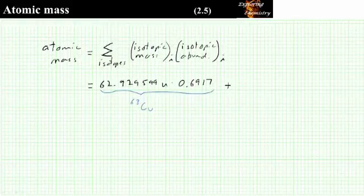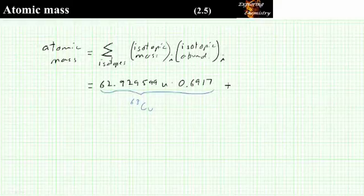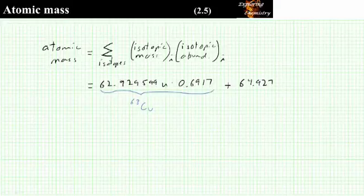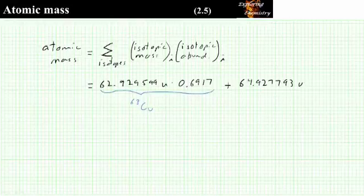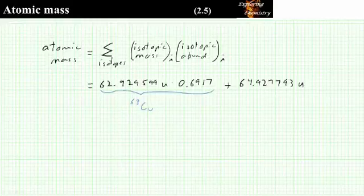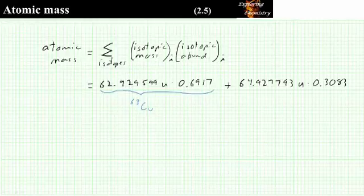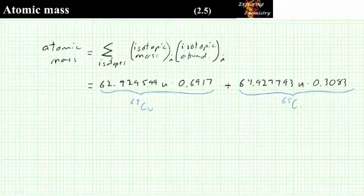And we now need to add the data for the other isotope, the mass of 65-copper. The mass of 65-copper is 64.927793 atomic mass units, and the abundance is 0.3083. And this is the data for 65-copper.